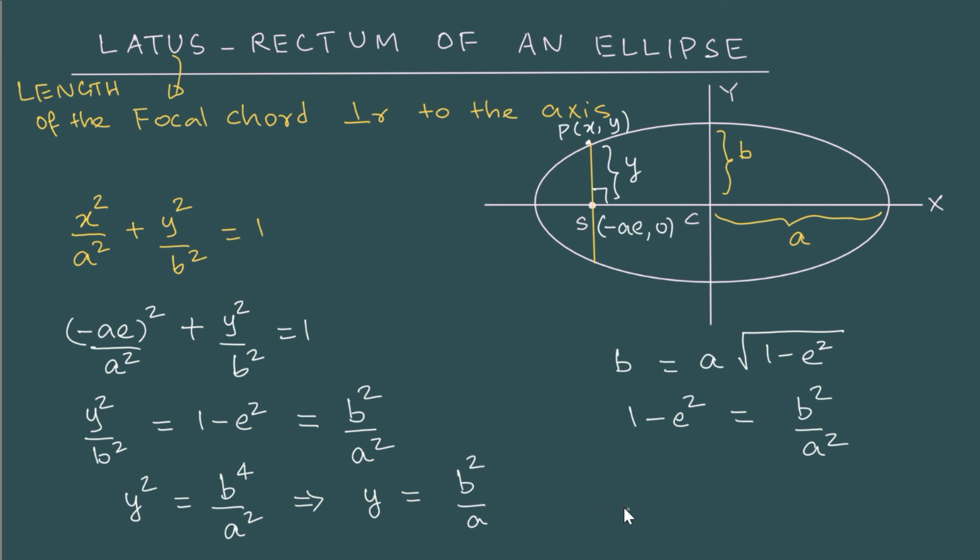And then this tells us that the latus rectum, the length of the focal chord perpendicular to the axis will be twice this. So that would be 2b square by a.